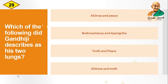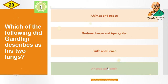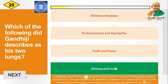Question: Which of the following did Gandhiji describe as his two lungs? Options are: Ahimsa and Peace, Brahmacharya and Aparigraha, Truth and Peace, Ahimsa and Truth. The correct answer is Ahimsa and Truth. Gandhiji described Ahimsa and Truth as his lungs during the movement of Satyagraha, as he believed deeply in the principle of Ahimsa.